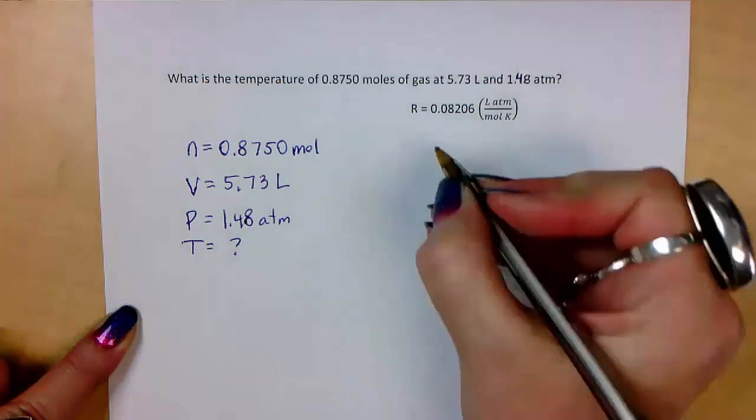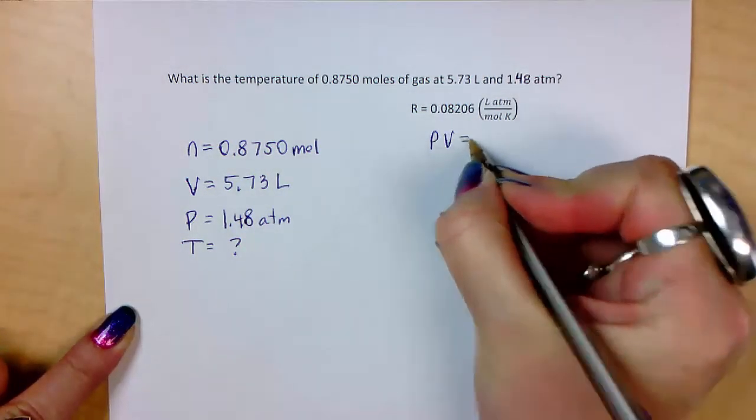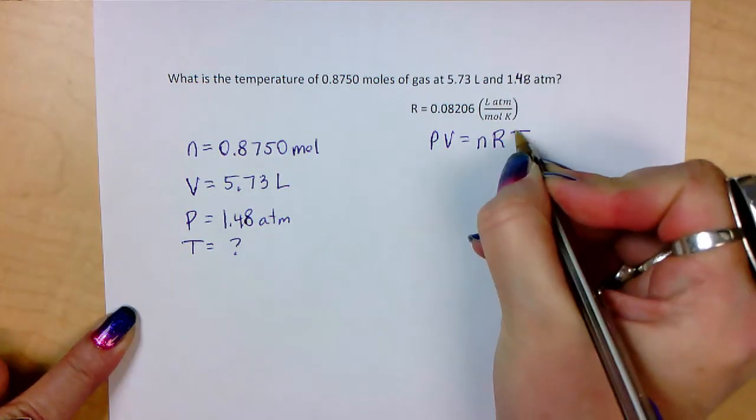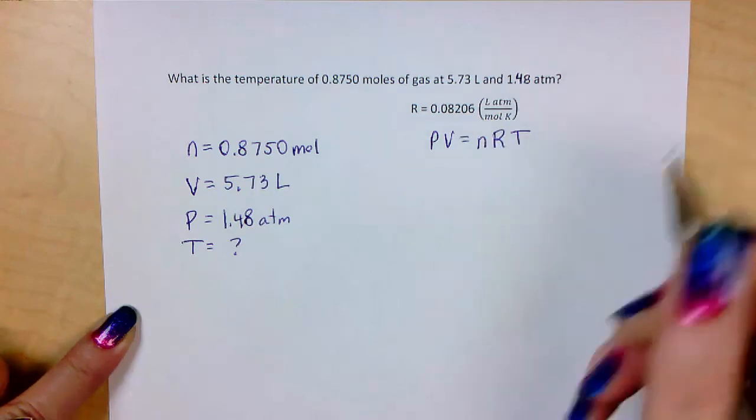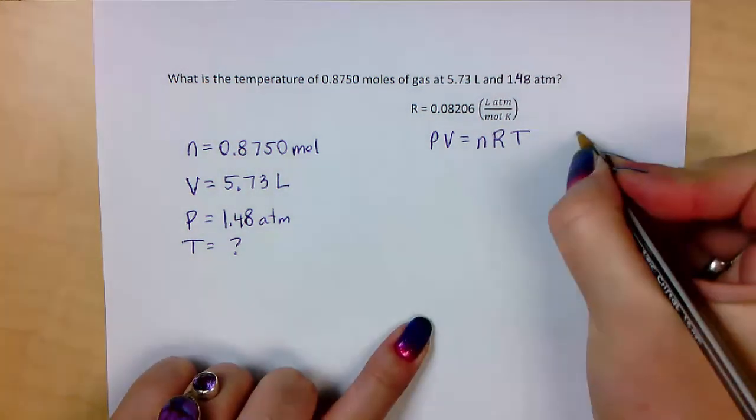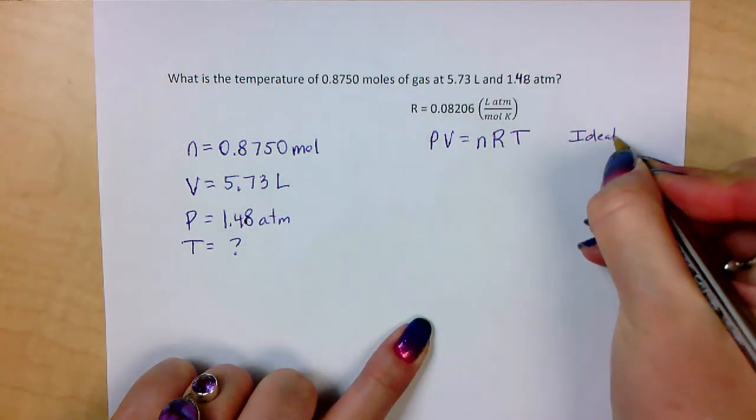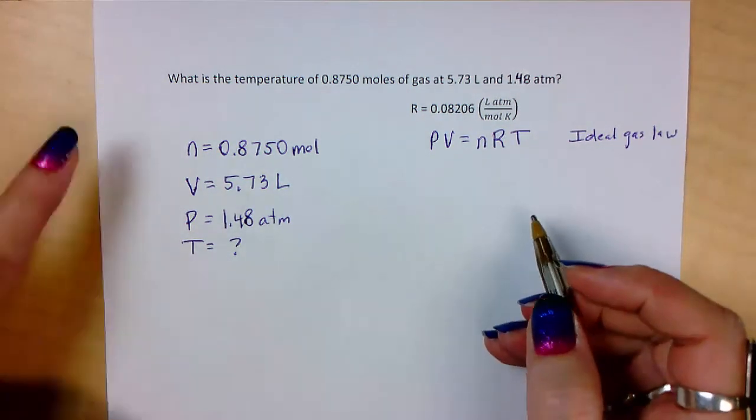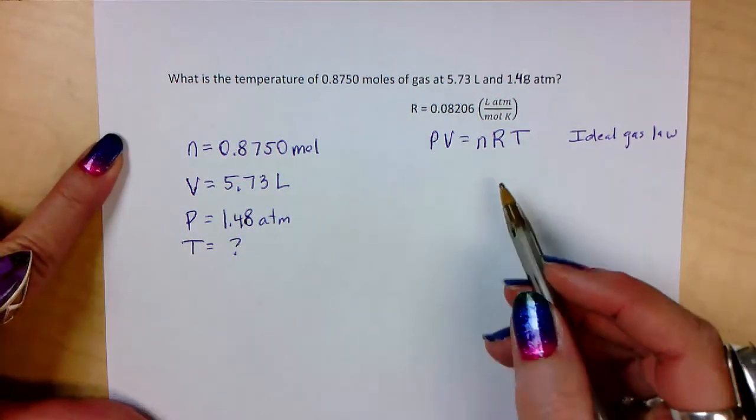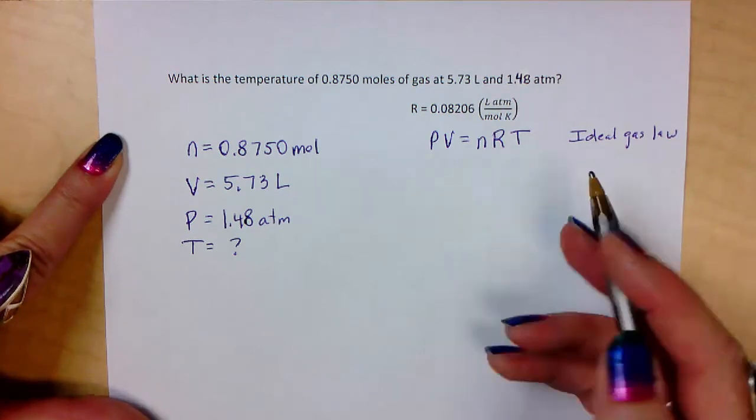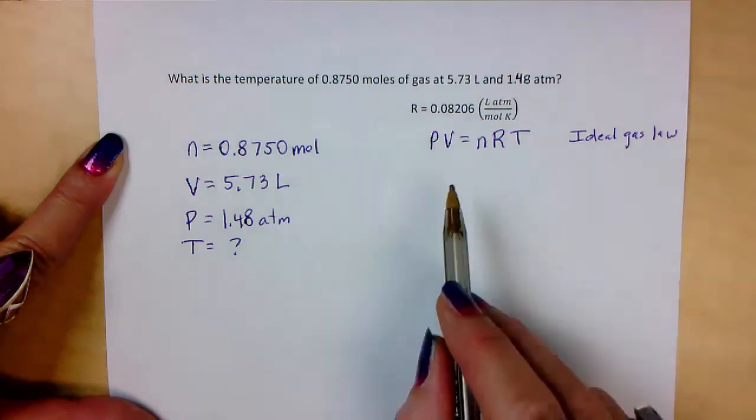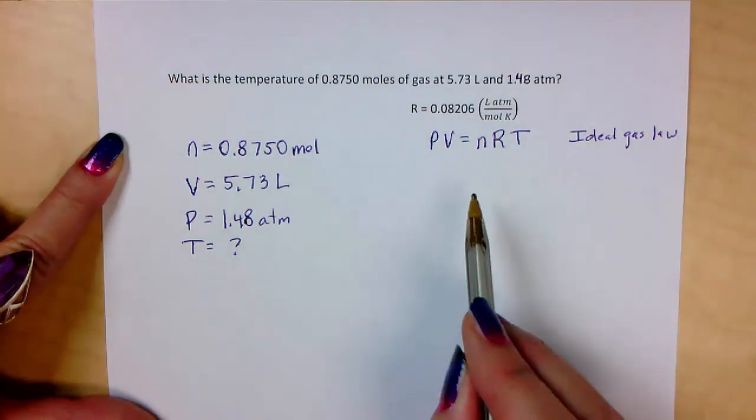It was PV equals nRT. That's why we have an R given. We're going to use the ideal gas law. PV equals nRT. Some people call it pervnert. And unfortunately, that is not on the back of the periodic table. So you need to remember this. PV equals nRT.